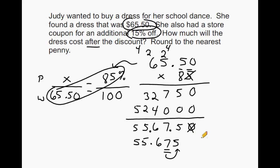So after the discount, we would say that Judy would pay a total of $55.68 for the dress. And that is how you can use proportions to solve word problems involving percentages.